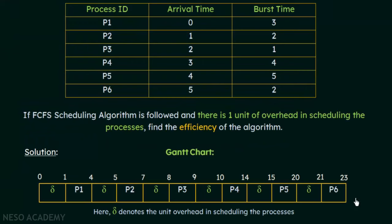This is how the Gantt chart for this set of processes will look like. It looks a bit different from the previous Gantt chart formed in the previous solved example. That is because we have this 'del' in this Gantt chart. This 'del' denotes the unit overhead in scheduling the processes, because there is one unit of overhead in scheduling.